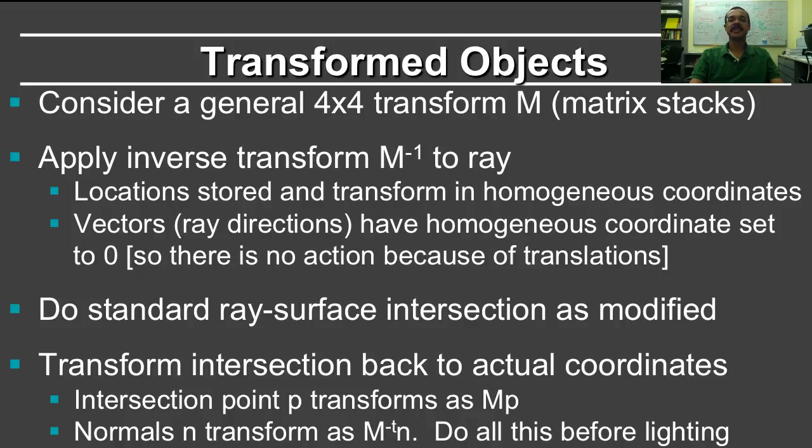You consider a general 4x4 transform matrix M, which can be implemented using matrix stacks, much the same way you did as in homework 2. You apply the inverse transform M⁻¹ to the ray. Remember that the ray consists of two parts, the origin and the direction. The inverse transform must be applied to both parts.